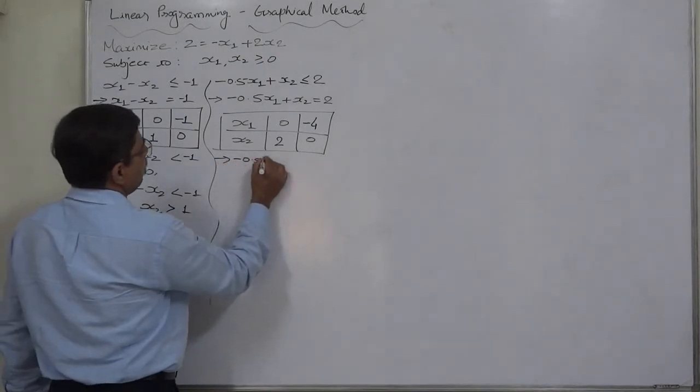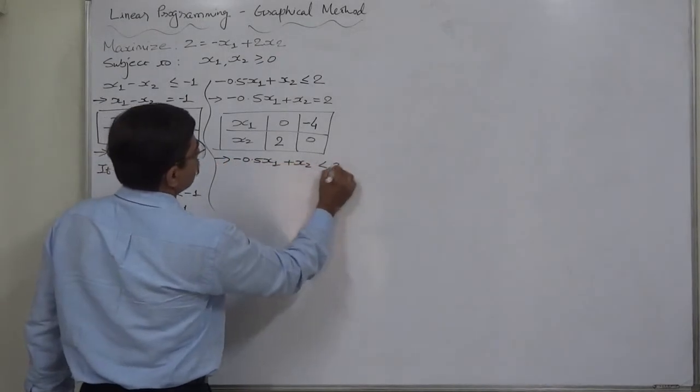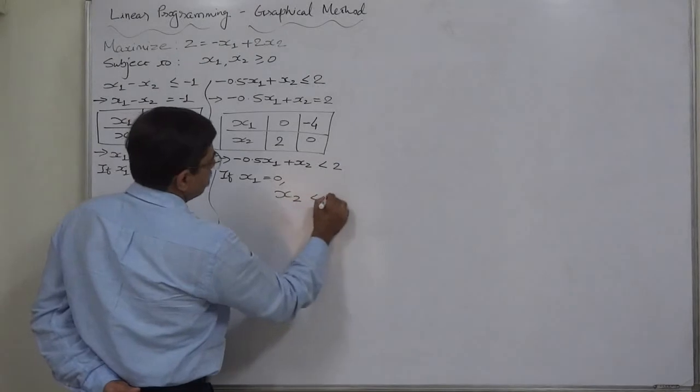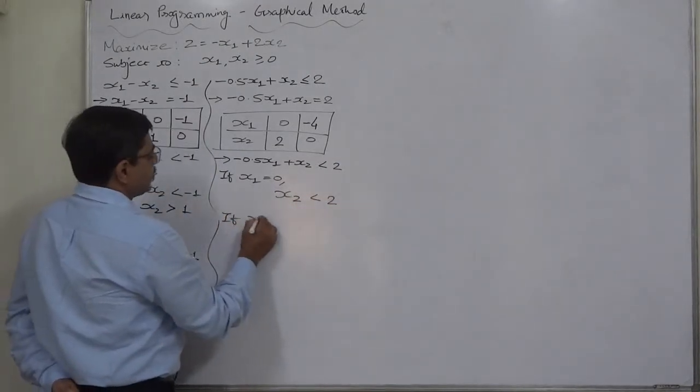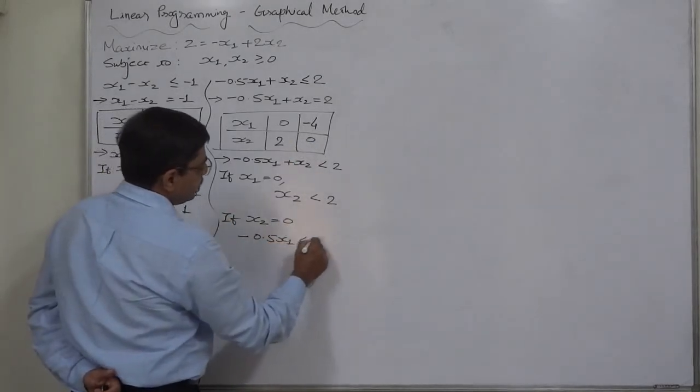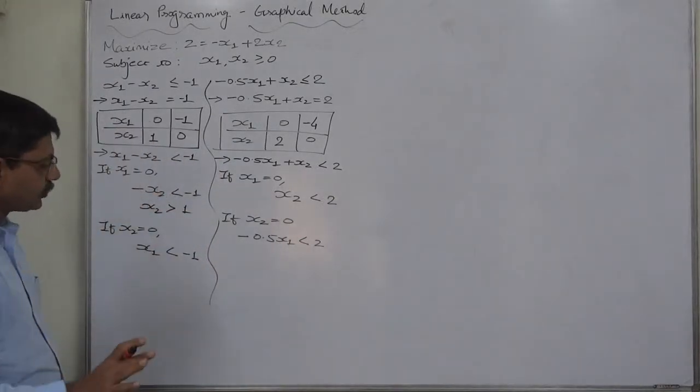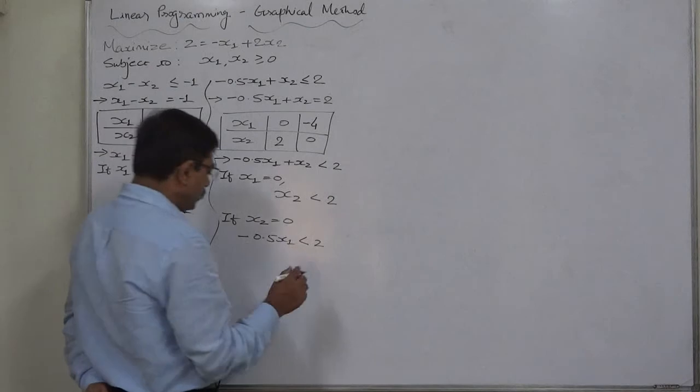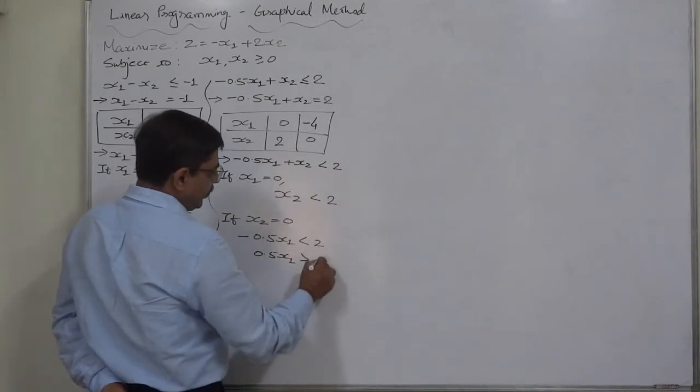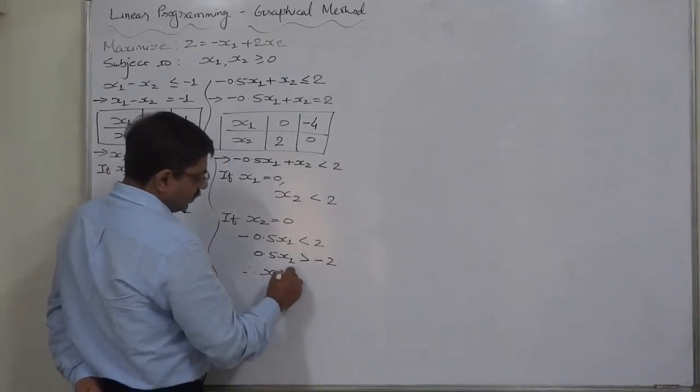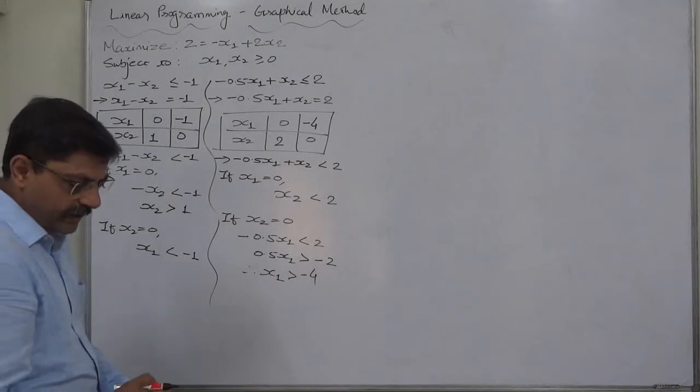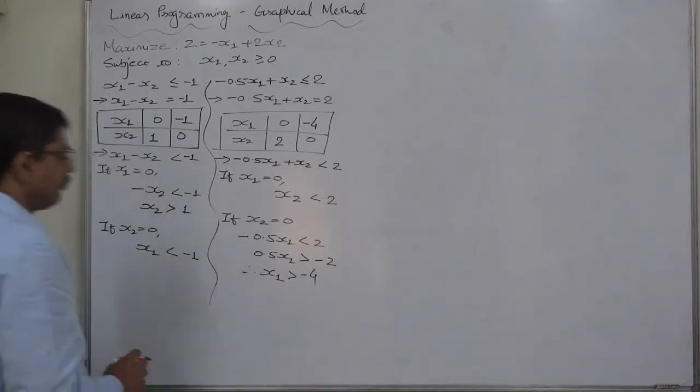Inequality will be minus 0.5x1 plus x2 less than 2. If x1 takes value 0, it will be x2 less than 2. If x2 takes value 0, then it will be minus 0.5x1 less than 2. We are going to change the sign simultaneously of all the things. Minus 0.5x1 will be 0.5x1, less than will be greater than, 2 will be minus 2. So, it will be x1 greater than minus 4.